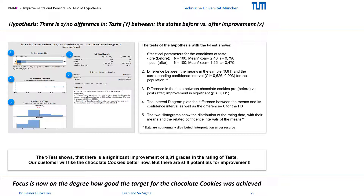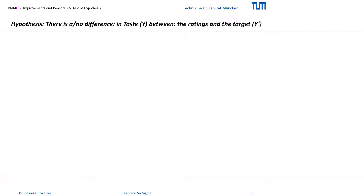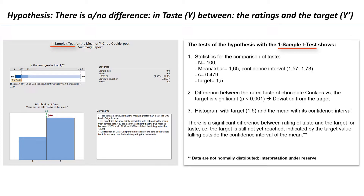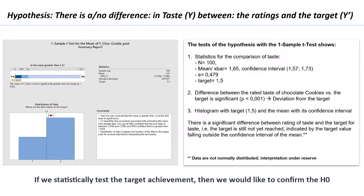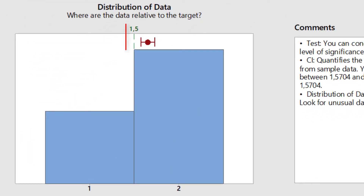With the next t-test we want to again evaluate the degree to which the target of 1.5 for the chocolate cookies was achieved. We formulate the corresponding hypothesis: there is or is no difference in taste between the rating and the target. Here we use the one-sample t-test, because we compare a sample with a criterion value. And contrary to the above hypothesis where we wanted to find a significant difference between before and after, we here wish that the H0 is confirmed, as in the test for normal distribution.